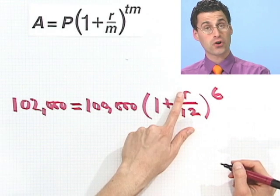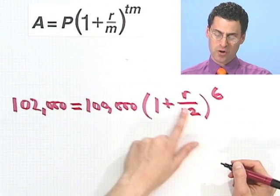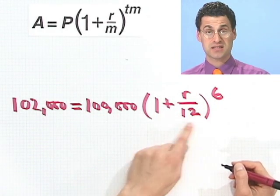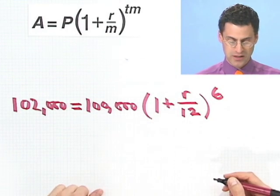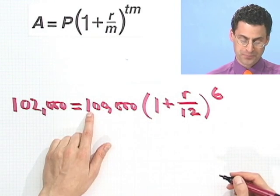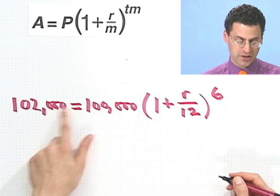Okay, so now I want to solve this for R. So actually, this is a polynomial in R. It's something R to the sixth here. So I'll be taking sixth roots at some point. I can divide both sides by the 100,000. Notice all those zeros go away.